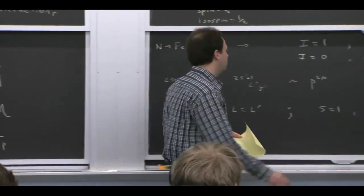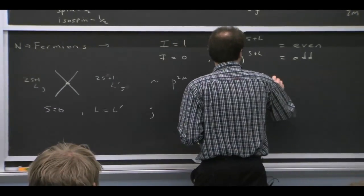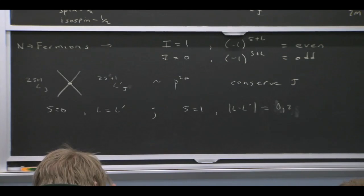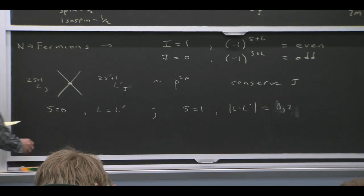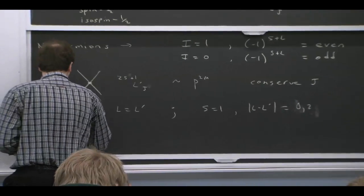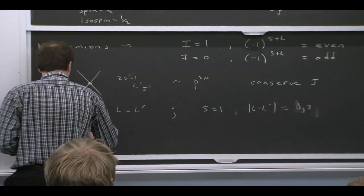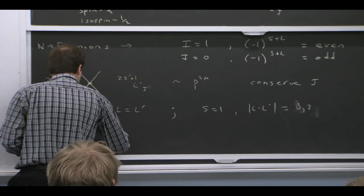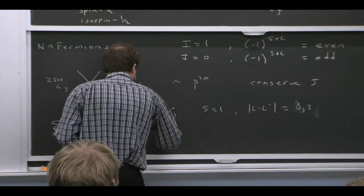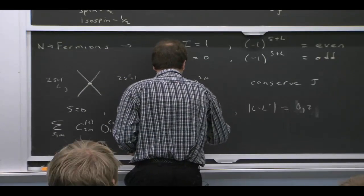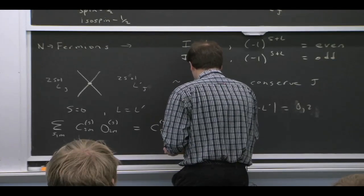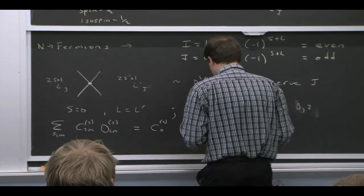OK, so we conserve J. So we can enumerate all the possible partial waves. We'll mostly focus on the S wave. So let me write out some of these operators for you.